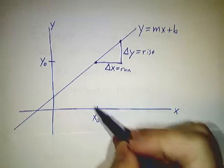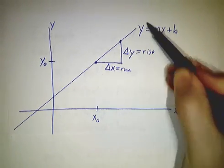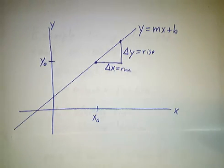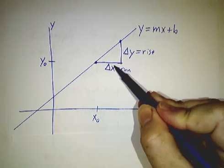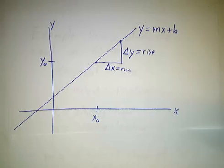Okay. So here's our picture. We started at x0, y0. If we graph the function for every run delta x, we get a rise delta y. And the ratio delta y over delta x is always m. So the line is y equals mx plus b.